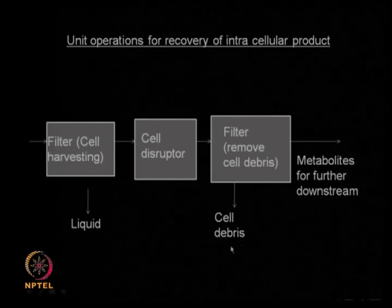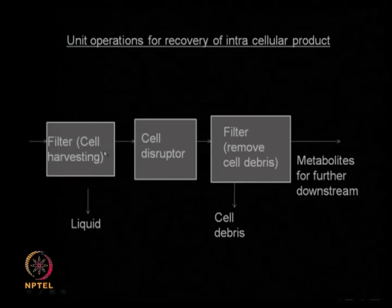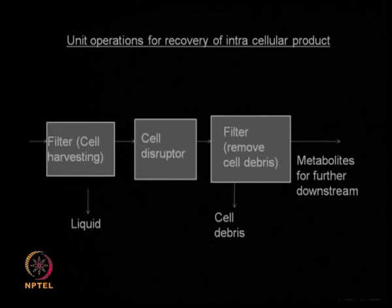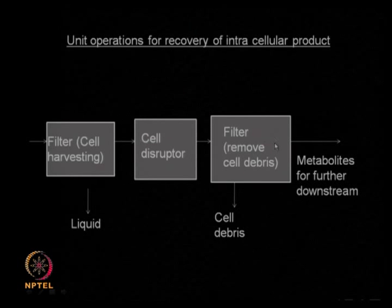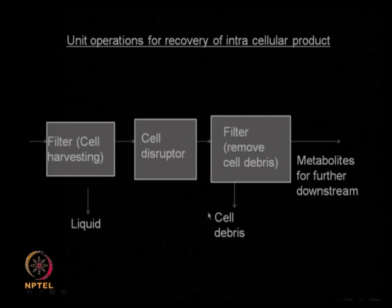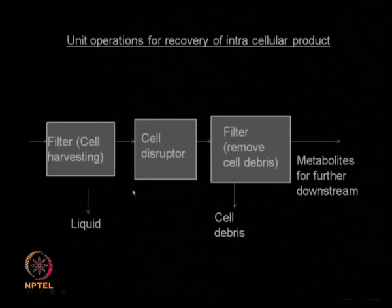Here you are removing the cell debris, whereas for extracellular products you are not interested in the cells — cells are removed in the very first stage of filtration. But if it is an intracellular product, the cells are harvested, then you break them, collect the liquid part which will hopefully contain all your product, and the broken cells are thrown out. So there will be extra downstream operations if you are interested in the intracellular product.